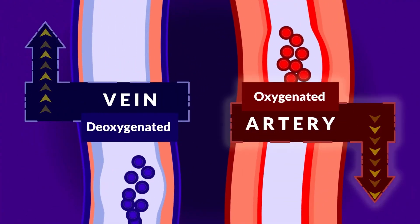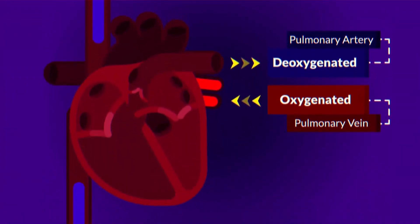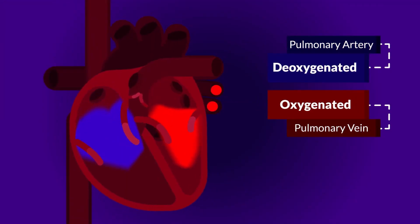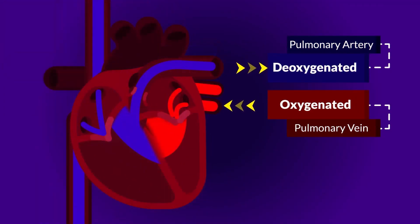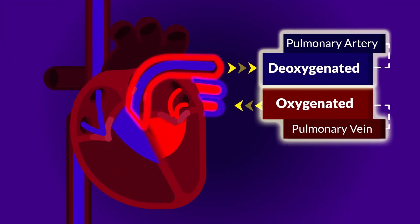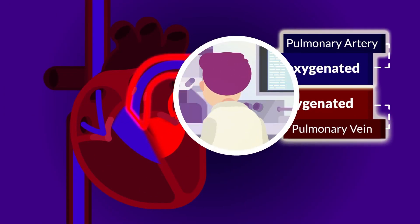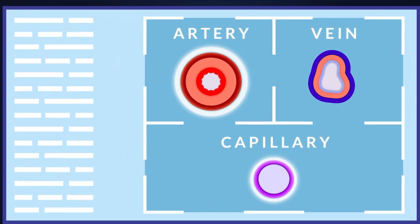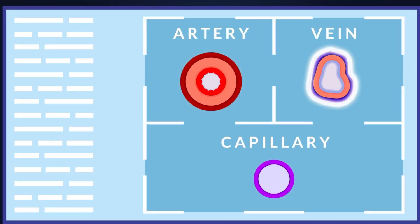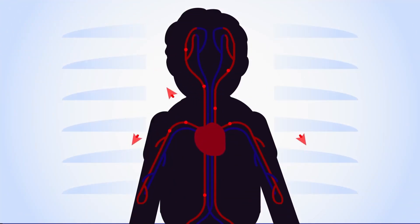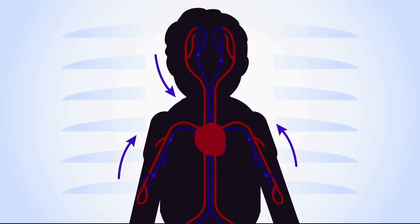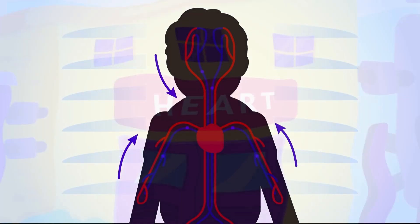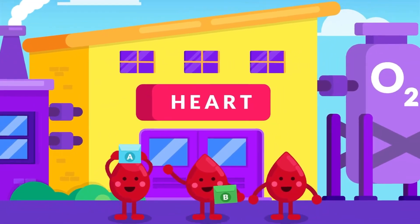The rule of which blood is carried by which vessel does not apply to the pulmonary artery and pulmonary vein — in both, the roles get exchanged. While observing a cross section of the three blood vessels, arteries and capillaries appear circular, while veins are ovular because of their composition. Arteries transport blood from the heart to organs, and the blood is transported back from organs to the heart by veins.